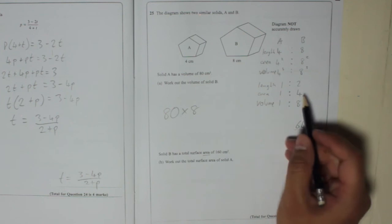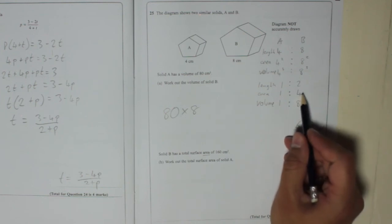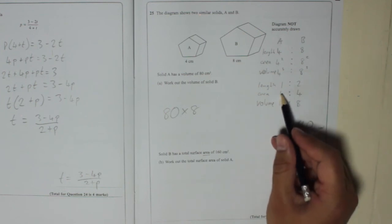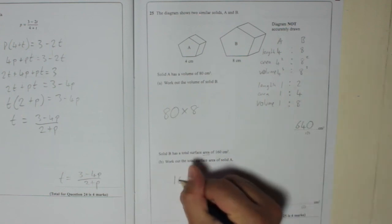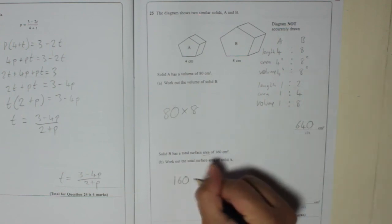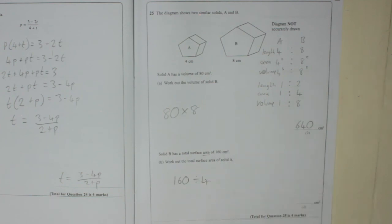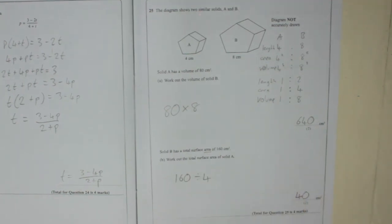We know that is 4 times bigger than A because the ratio is 1 to 4. So all we have to do is take 160 and divide it by 4. 16 divided by 4 is 4, so 160 divided by 4 is 40 centimetres squared. Done.